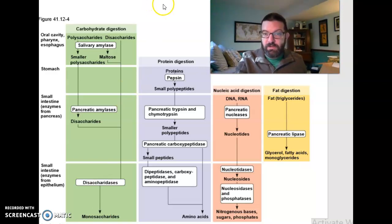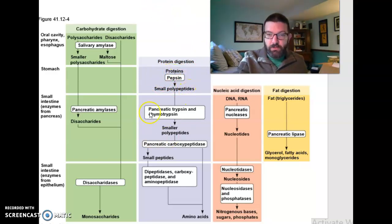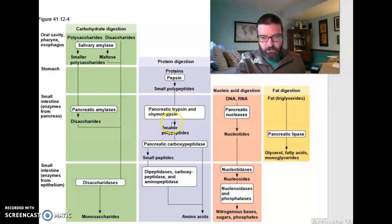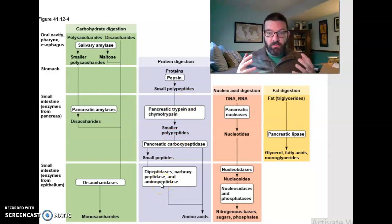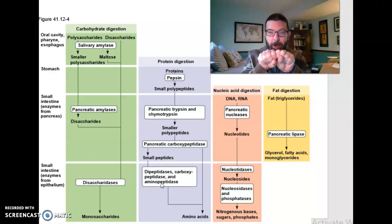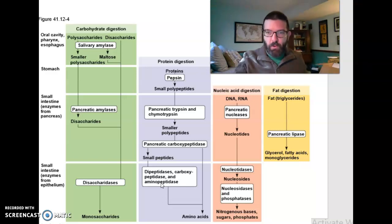Proteins you don't start digesting until your stomach, because of pepsin in the stomach. Then we continue digestion of proteins in the small intestines with other enzymes called trypsin and chymotrypsin. Just like with carbohydrates, the last bit of digestion occurs with enzymes fixed in the wall of the intestines. They break those dipeptides into individual amino acids, and we absorb them across the wall.